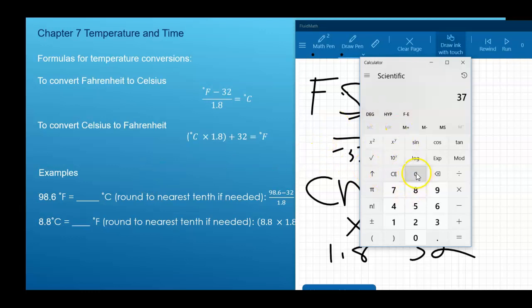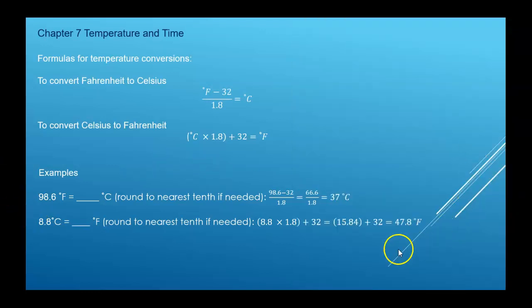If I started with Celsius, say I have 8.8 Celsius. Celsius is CMA. Multiply, so I always multiply 1.8, then add 32, 47.84, or round it to 47.8.